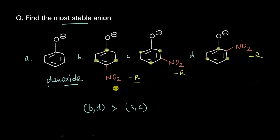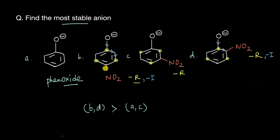Resonance is distance independent — it doesn't matter whether you put the NO2 group at ortho or para, it creates the exact same positive charge at those positions. So resonance-wise they impart the same stability. However, NO2 is also a minus-I group, and inductive effects depend on distance. Putting NO2 at the ortho position means it can pull more electrons via induction from the O- compared to the para position. Therefore, between B and D, D is going to be more stable.